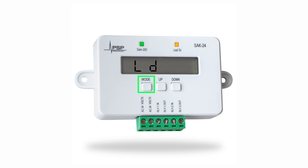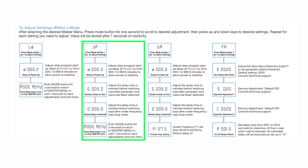The SAK24 is now set for load drop. The SAK24 can also be set for under frequency load management. The default under frequency settings of the SAK24 are for air-cooled generators, which make up the bulk of residential generator sales. This is master mode UP.